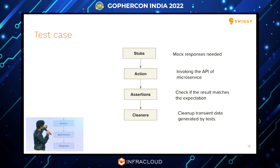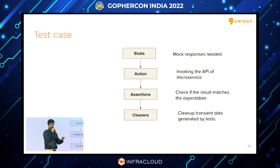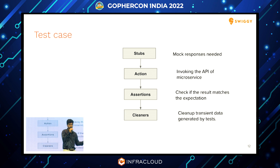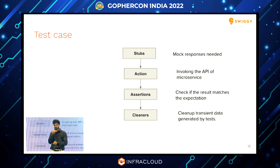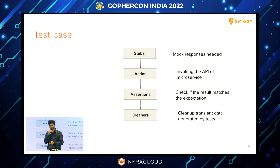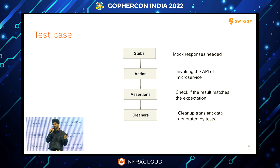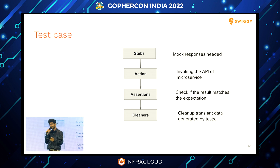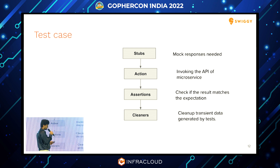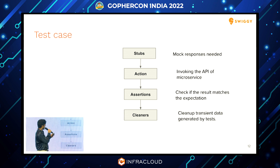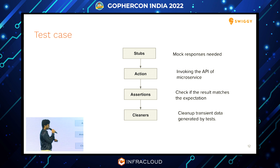Once the stubbing is done, we invoke the API of the microservice — the second step, the action. For example, if the microservice exposes an HTTP endpoint, we invoke that endpoint. Once invoked, we observe the result — the third step, assertions — checking whether our expectation matches what is actually returned. The fourth step is cleaning up the state. Since we run multiple test cases, each test case ideally runs with a clean slate so one test case doesn't affect another. For example, if there's a DynamoDB, we clean up the database; if it's Kafka, we clear up the topics.